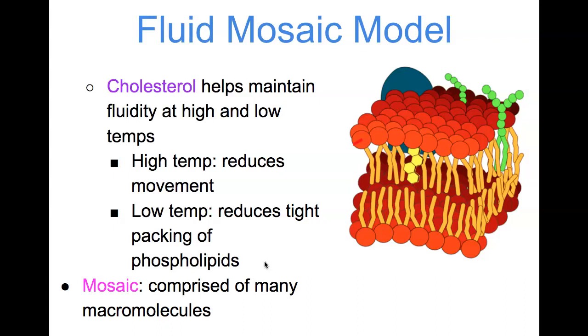That mosaic model means that it's comprised of many macromolecules. It has the fats, which is the major component, but you also have proteins embedded in there. You have other types of fats that are embedded in there, and you also have carbohydrates that play a role in the cell membrane as well. So let's look at the role that some of these other substances found in the plasma membrane play.